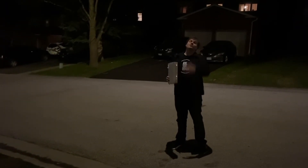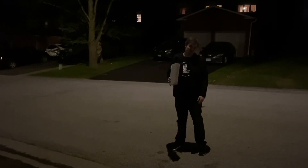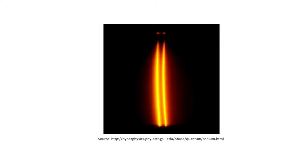What about a street light? When I view the street light through the spectrometer, two yellow lines appear. These lines correspond to the emission spectrum of sodium. This means that the street light uses sodium to produce light. Pretty neat.